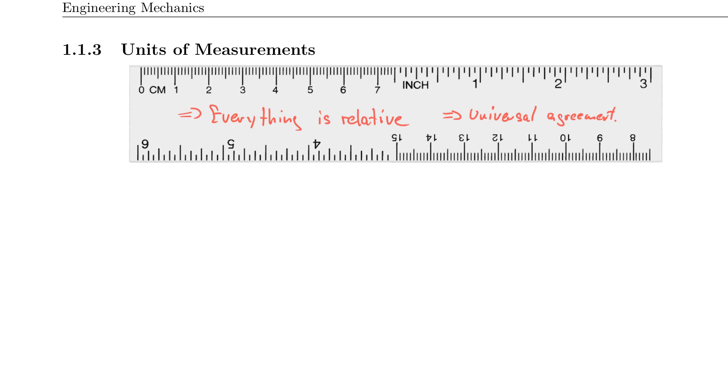The things we need agreement on are actually threefold in engineering mechanics: expressions for length, something that defines mass, and something that defines time, because those three units are actually sufficient to describe everything else. In the SI system we have meter, then the mass is actually the kilogram, and then we have seconds. This system is known as the MKS system.